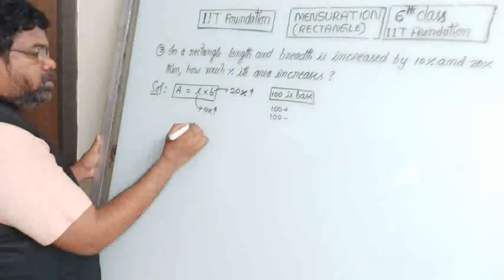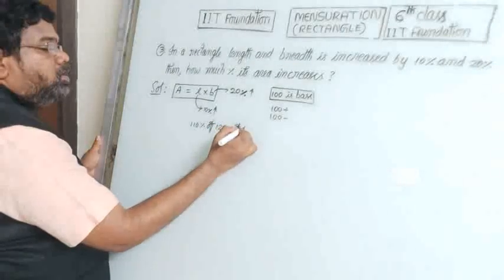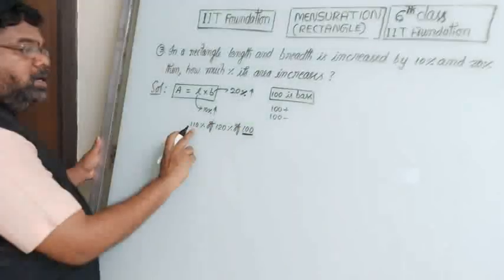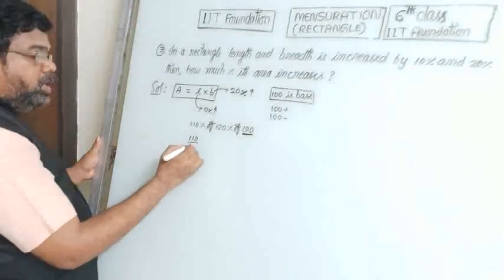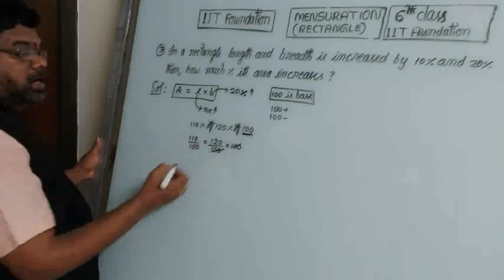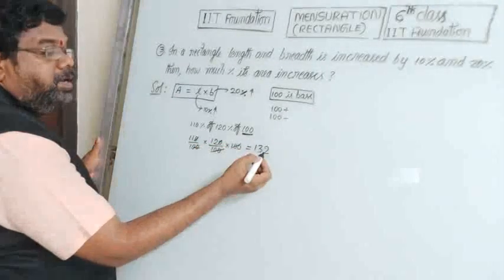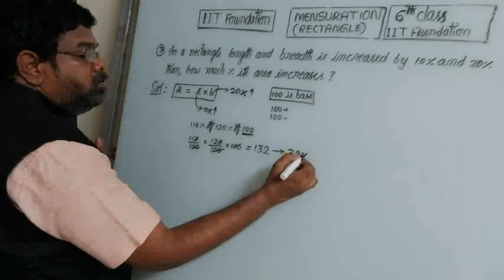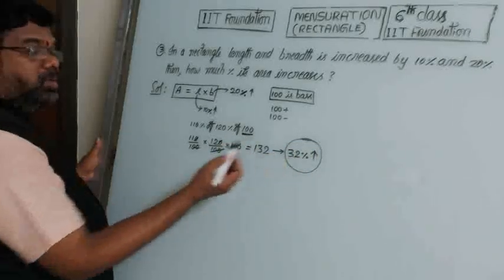Length increased by 10% means take 110. Breadth increased by 20% means take 120. Divide by 100: 110 by 100 into 120 by 100 into 100. The hundreds cancel, giving 11 into 12 equals 132. The resultant value is 132, which is greater than 100 by 32, so the area increases by 32%.